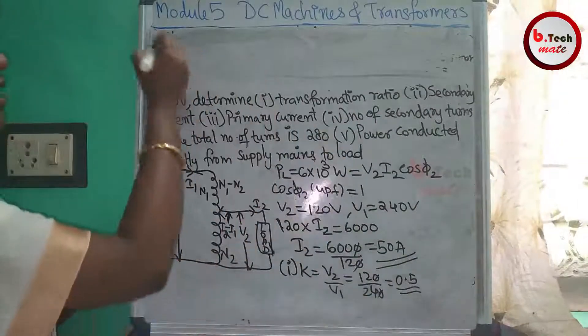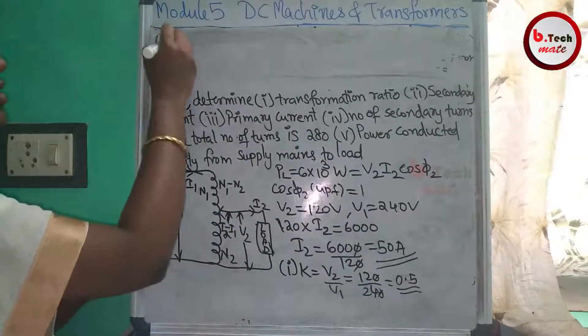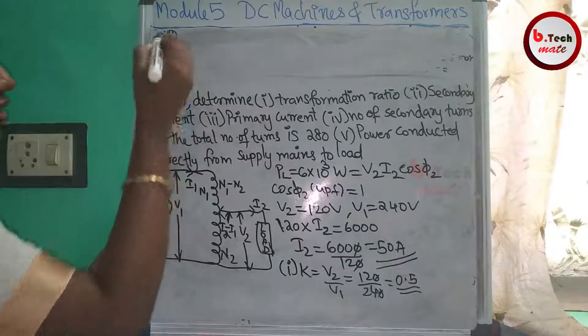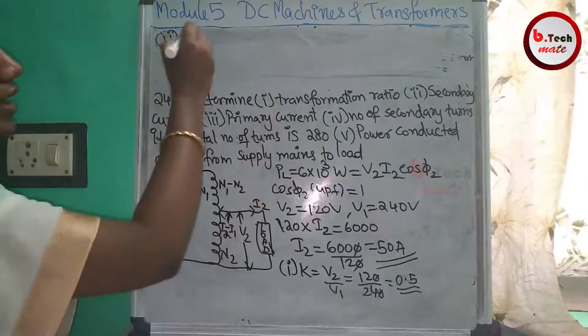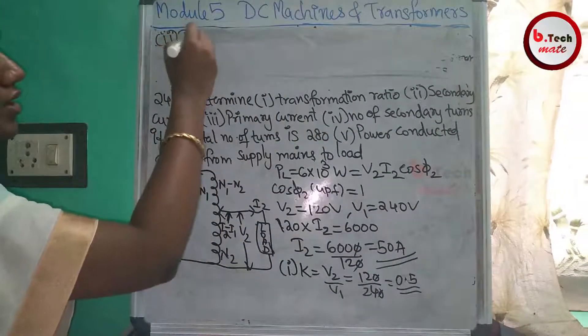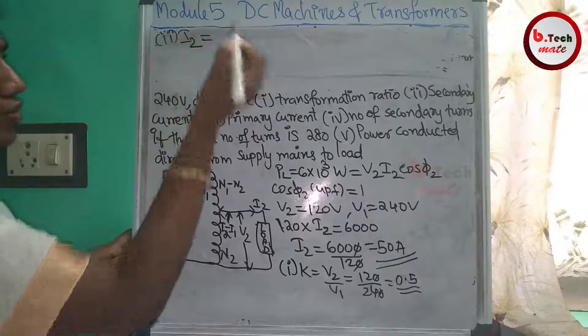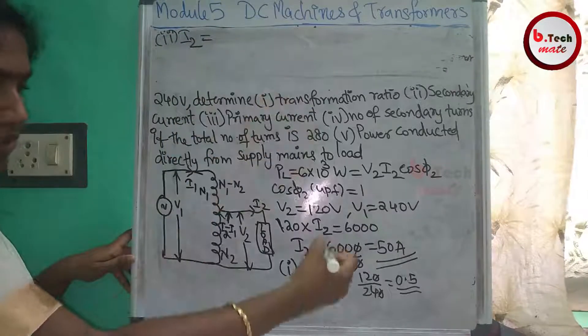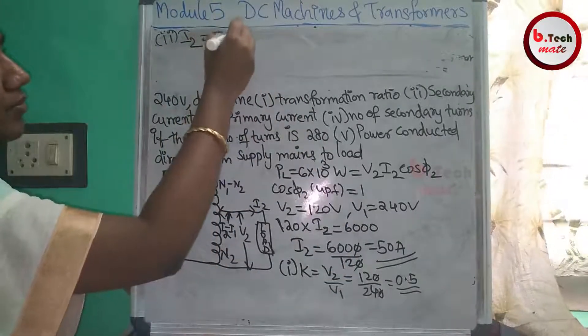Second part: the secondary current I2 is equal to 50A.